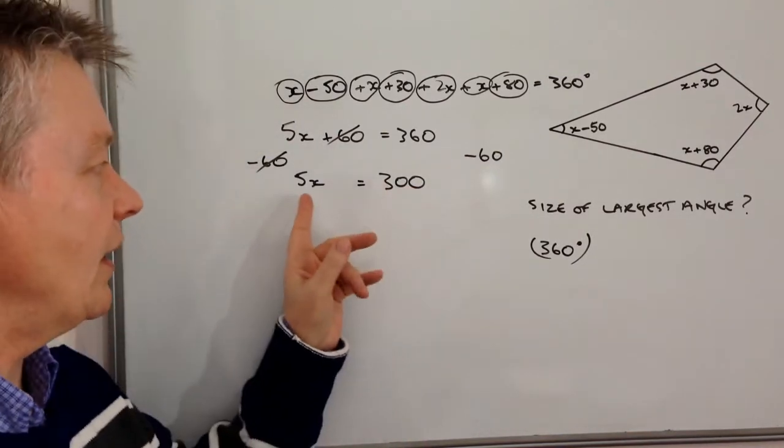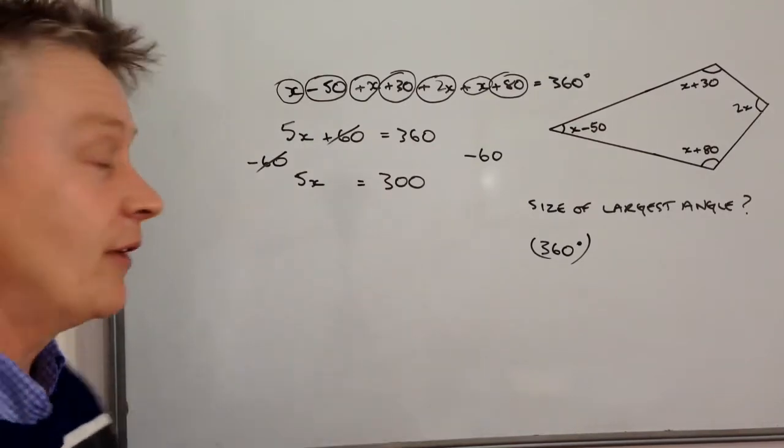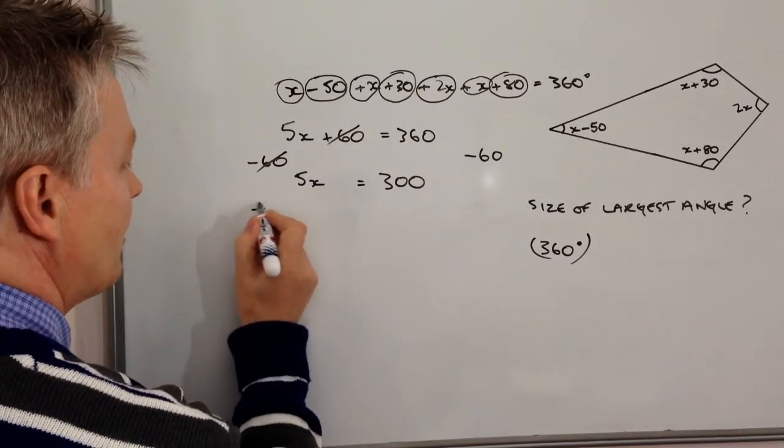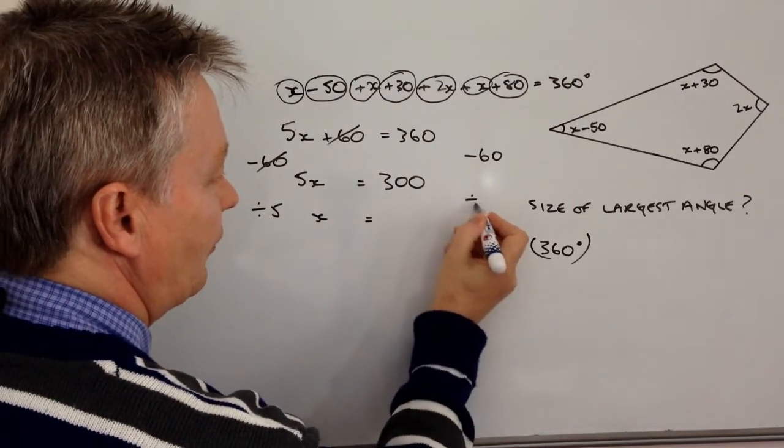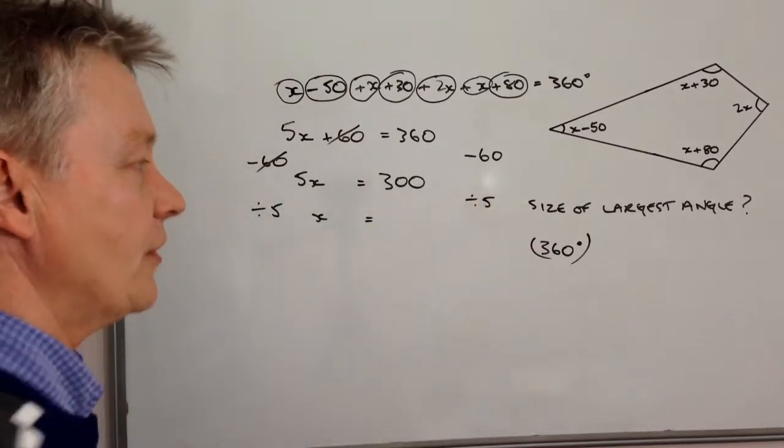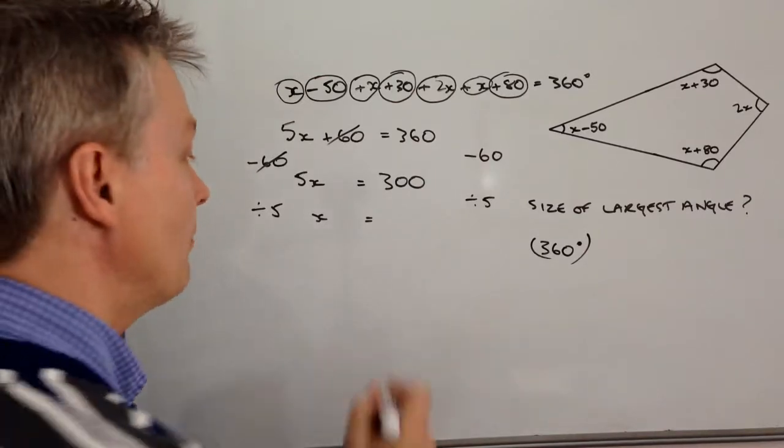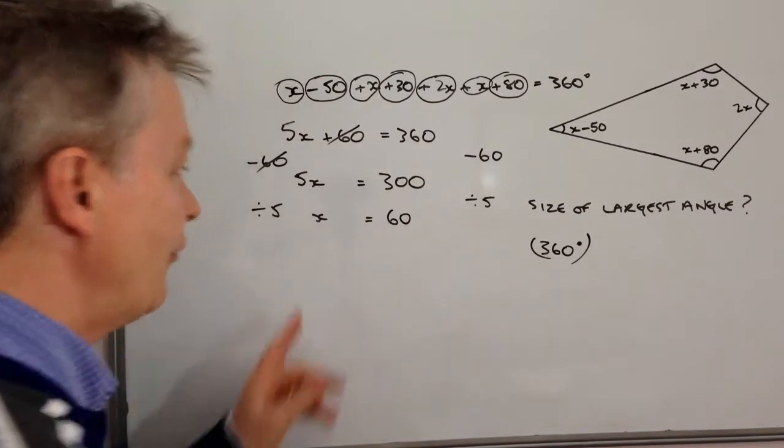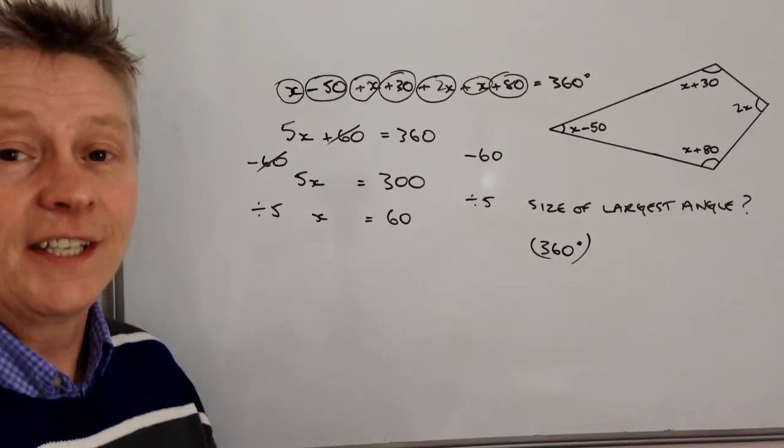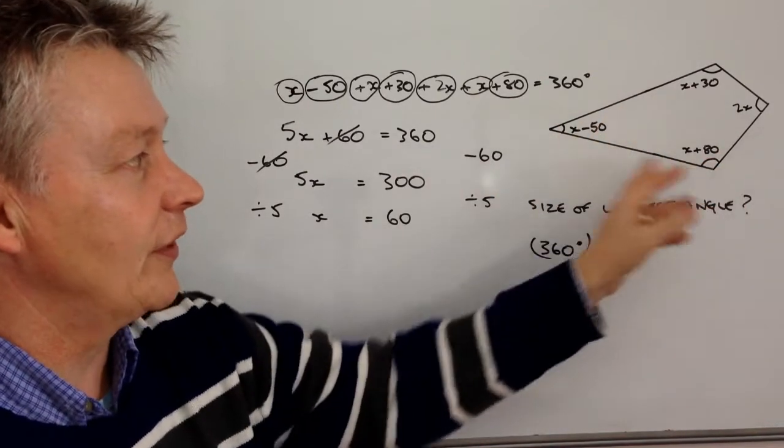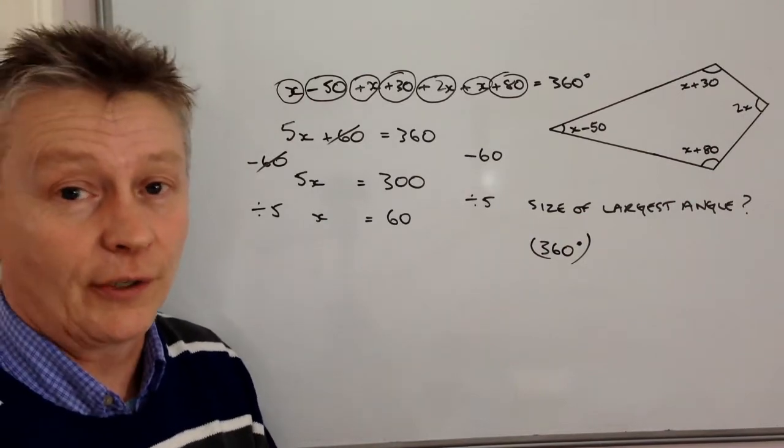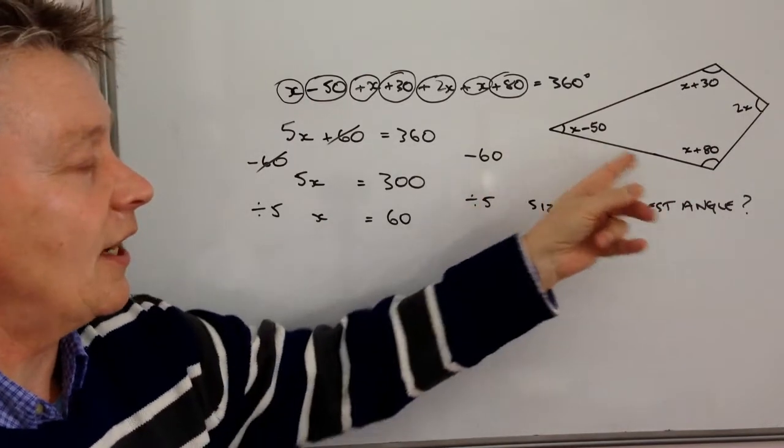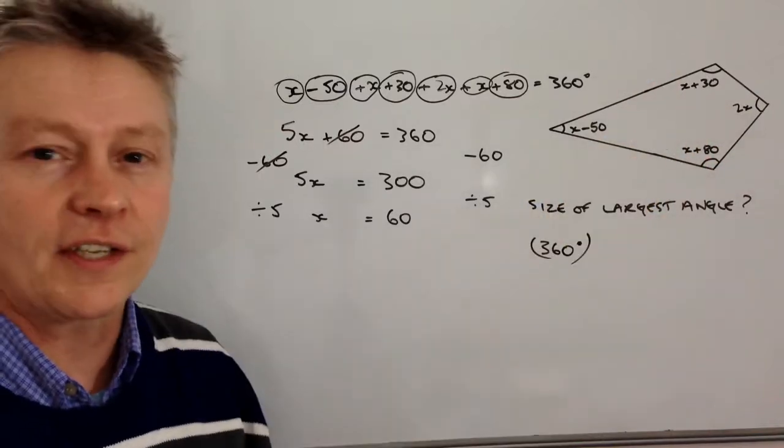So then if I divide through by 5, I'm going to get my value of X. So divide by 5, I get X and divide by 5 this side, I get 300 divided by 5. That's going to be 60. So therefore, X is 60 degrees in all of these cases here. So it means that I can just use that value of X at 60 and work out the value of each of these angles.